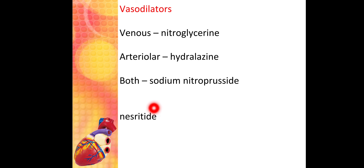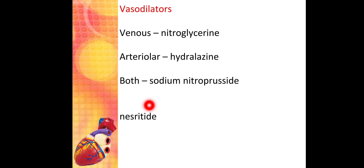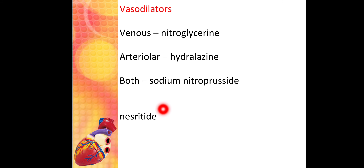Nesiritide is a recombinant form of brain natriuretic peptide (BNP) secreted by the ventricles themselves. It acts on vascular smooth muscle, causing vasodilation. As a recombinant BNP, it is also useful in CHF.